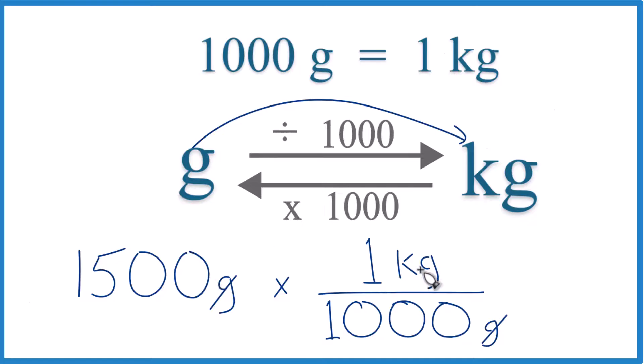1,500 times one kilogram—that's one thousand five hundred kilograms. Divide that by a thousand, you get 1.5 kilograms. Just like before. This is Dr. V. Thanks for watching.